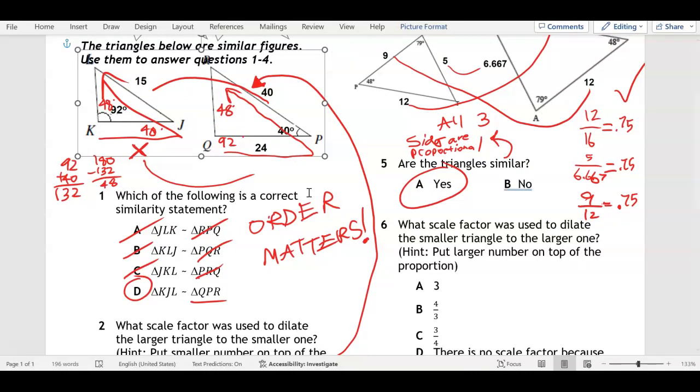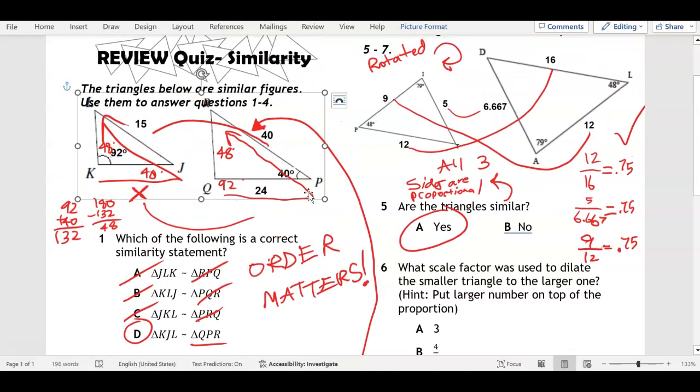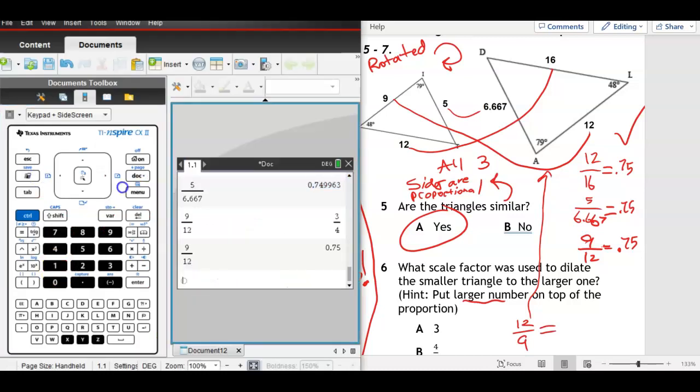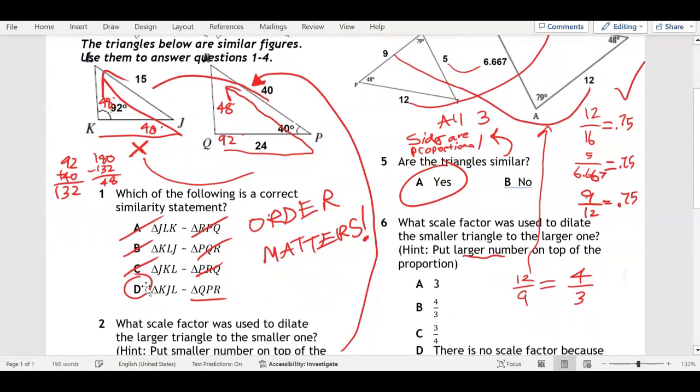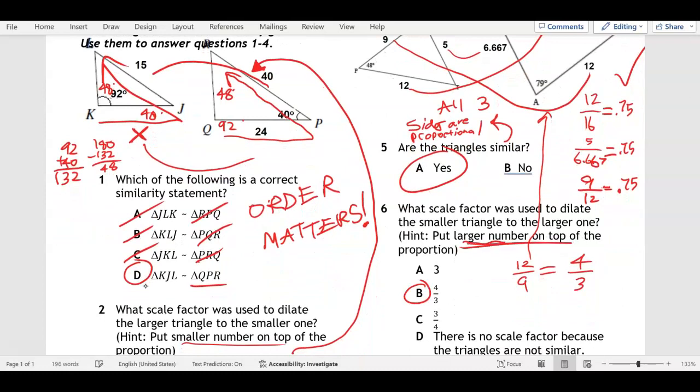Number six: what scale factor was used to dilate the smaller to the larger? Let's go ahead and put, this time we're going to put the larger on top of the proportion. Let's take this connection, larger on top, 12 over 9. We're just following those instructions. What is 12 divided by 9? 4 over 3.